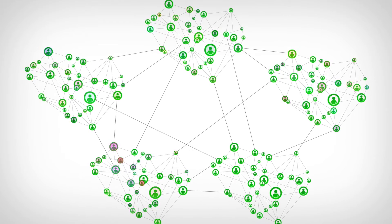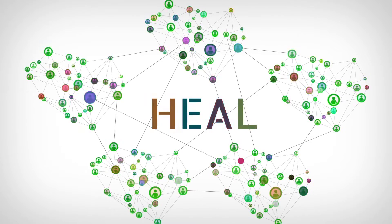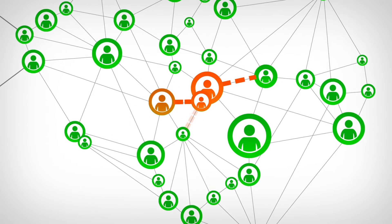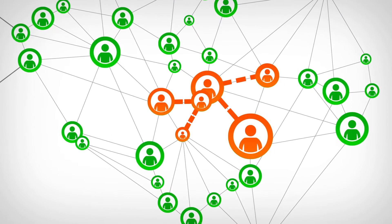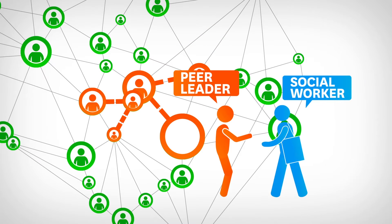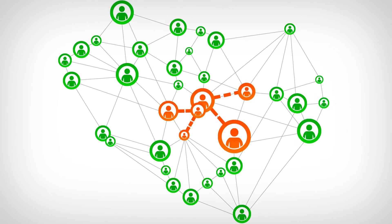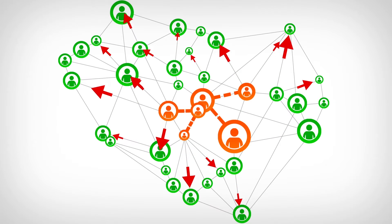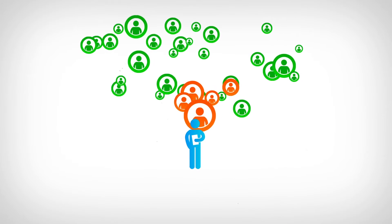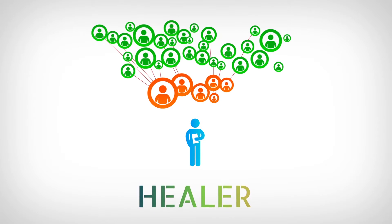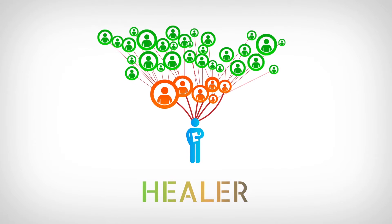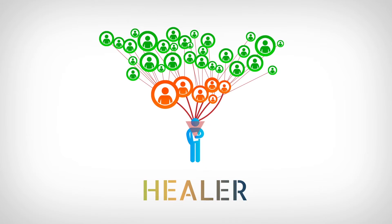This information is then analyzed by Heal, the core algorithm that powers Healer. Heal pinpoints which homeless youth in the network would make successful peer leaders. Social workers then educate these peer leaders about HIV prevention and encourage them to share their knowledge with their social circles. Finally, social workers gather more data about the network based on feedback from the peer leaders and enter this information back into the Healer system, enabling the algorithm to continually refine its results for future interventions.